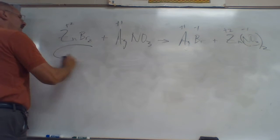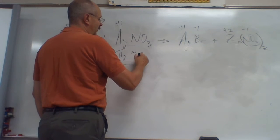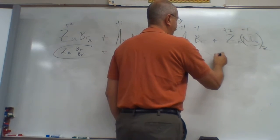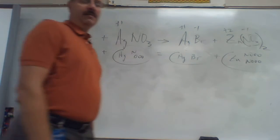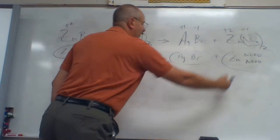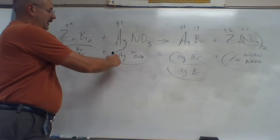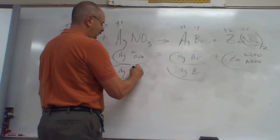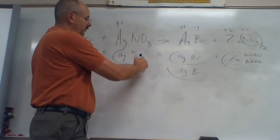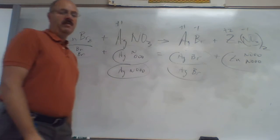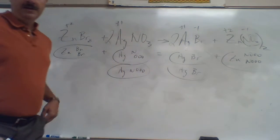Now I do my counting: Zn, Br and Br, plus Ag and N and three O's equals Ag and Br, plus Zn and N and three O's — two times. Zn: one, one. Br: one, two — I only got one, so I need another one of this guy. Then Ag: I got two Ags, so I need another one of this guy. N's: one, two — one, two. O's: three, six — three, six. There's my final answer: one, blank, one, two — put a two; one, two — put a two; one, leave blank.